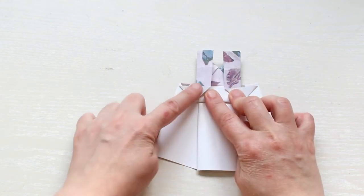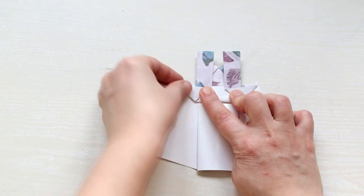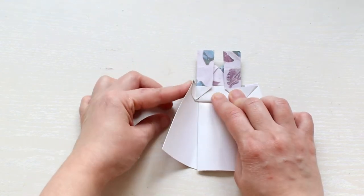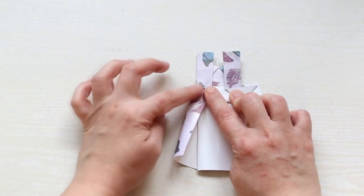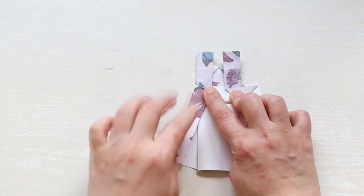After folding the top it's time to adjust the bottom as well. So crease the sides of the skirt to form an A-line skirt shape.